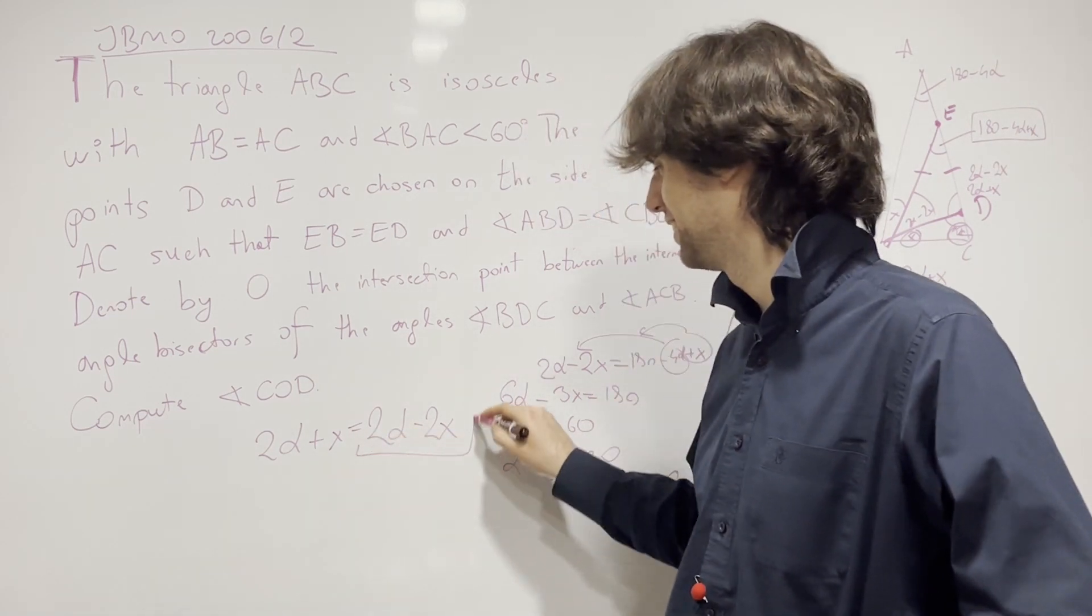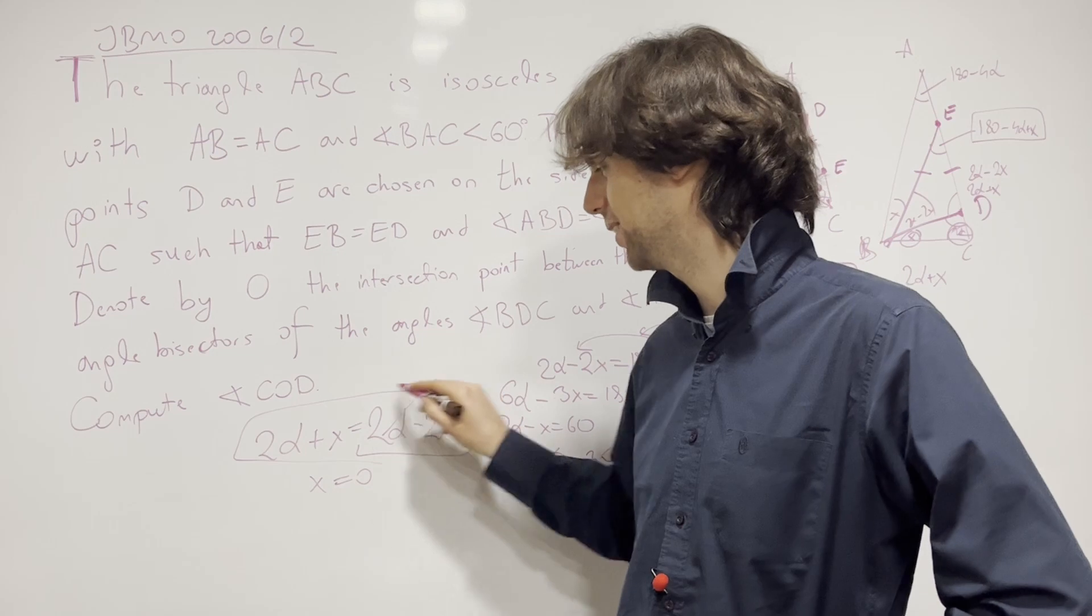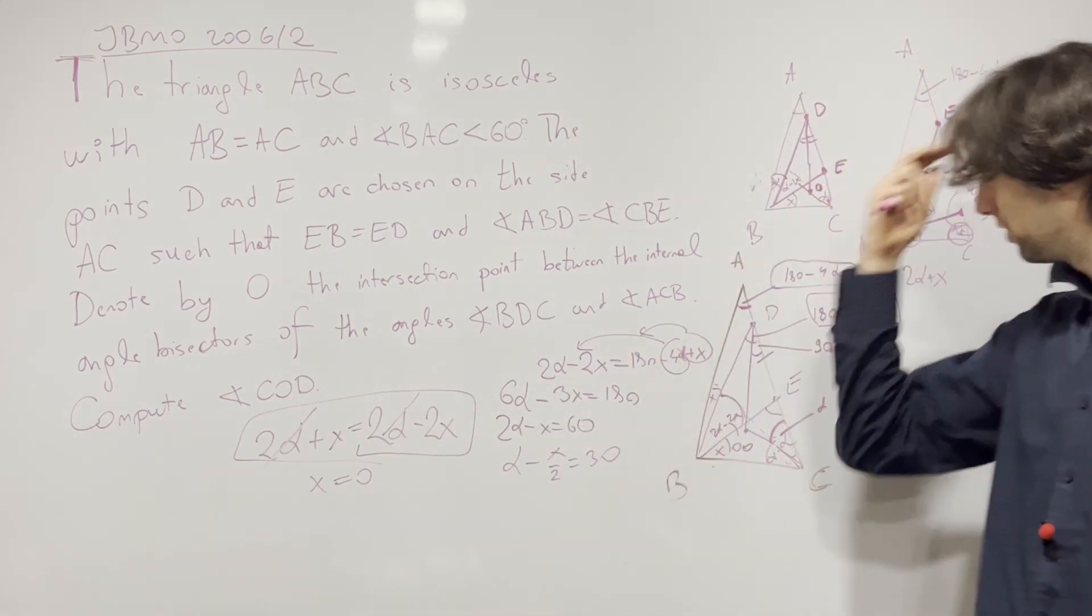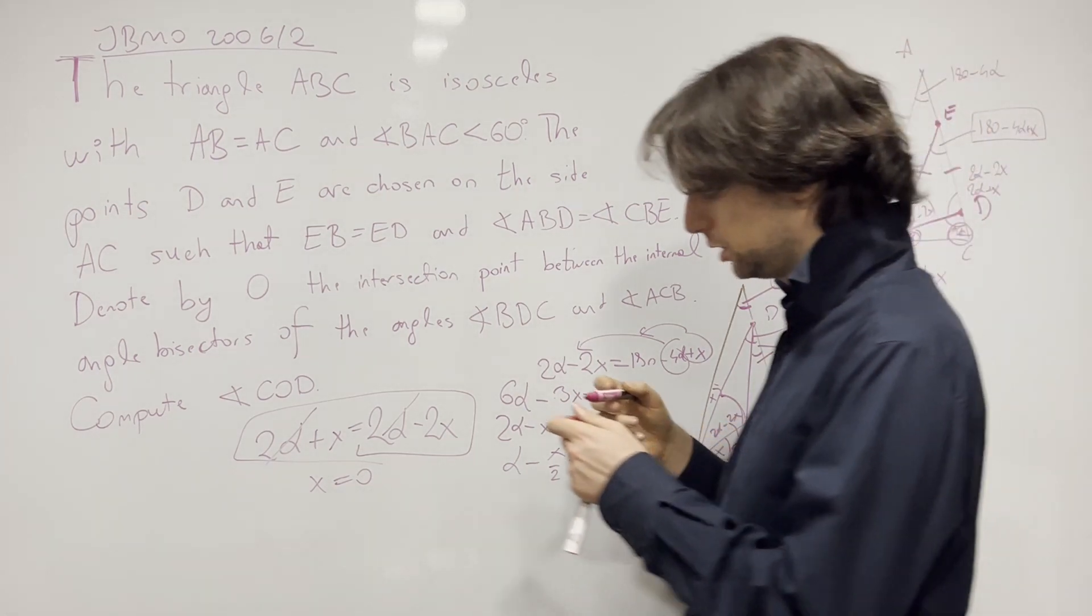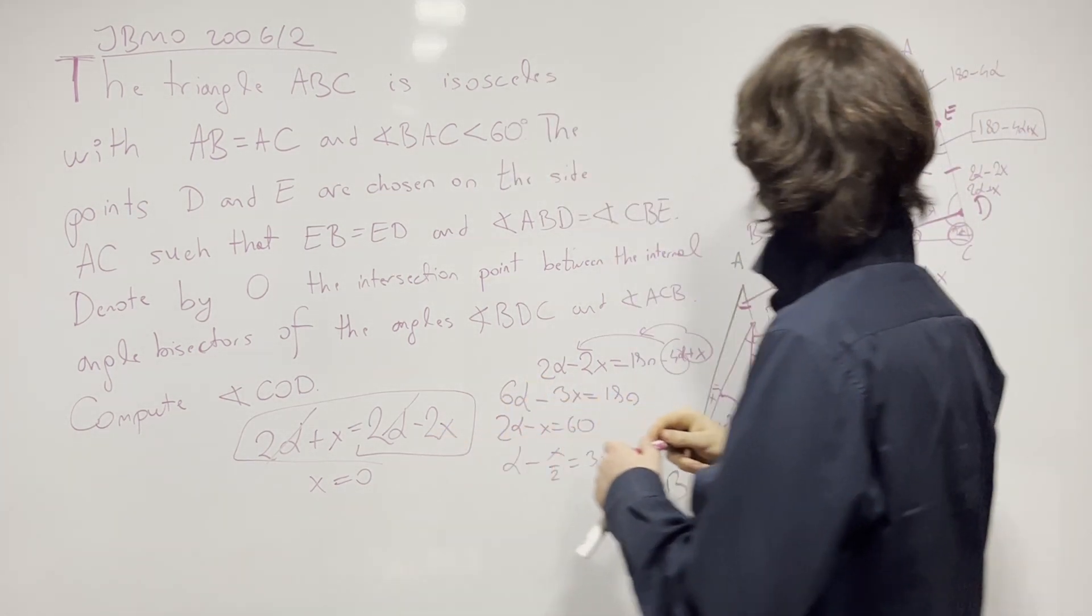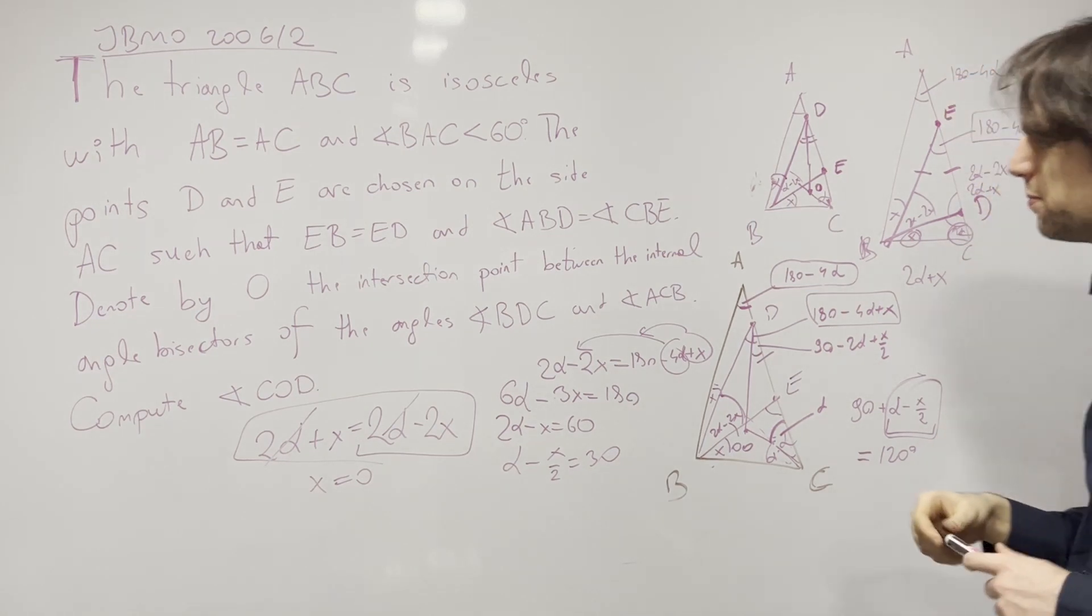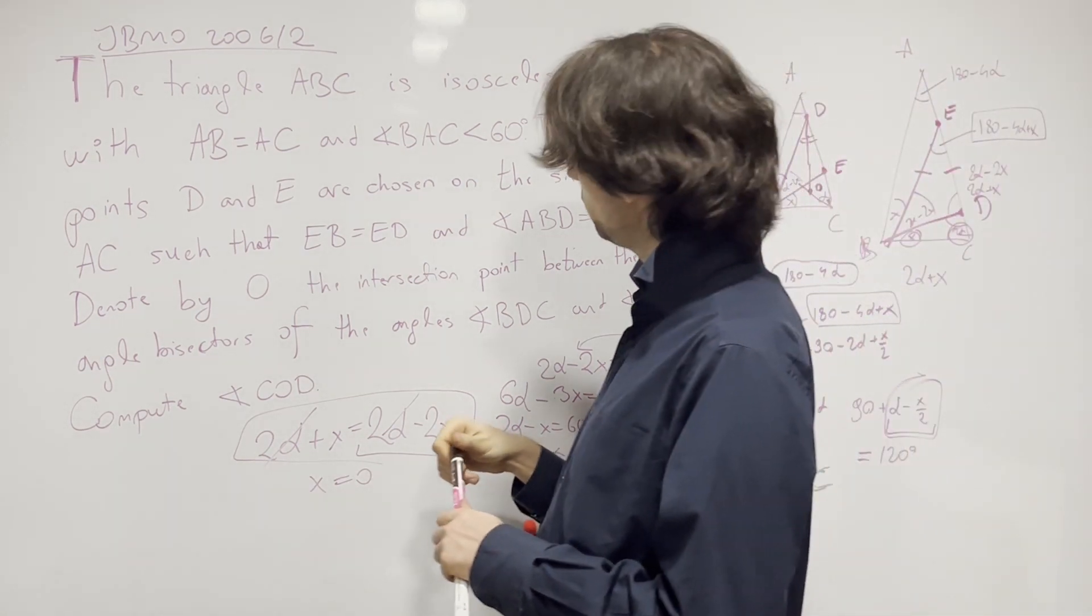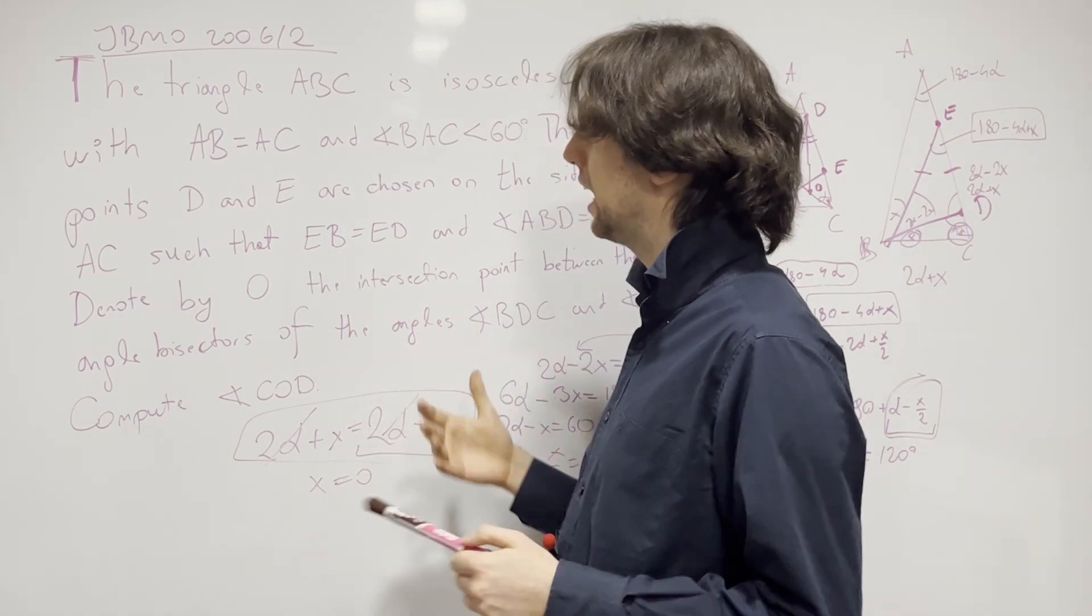And so we would have that 2 alpha plus X needs to be the same as 2 alpha minus 2X. However, what do we have? We have that from here it will follow that X equals 0. The alphas cancel out, which is a contradiction of a sort. It says that these points actually, E would have to correspond to A and D to C.